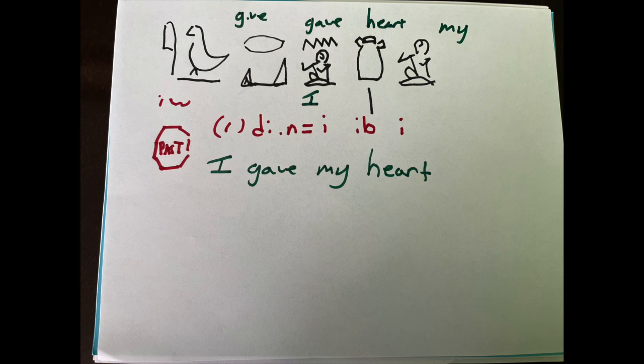I gave my heart, or give becomes gave—heart my i, if you will, in that English to Egyptian word order.